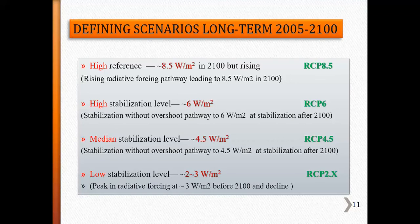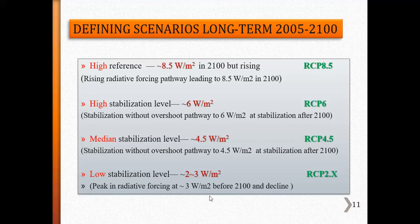RCP 6 is a high stabilization level without overshoot pathway. RCP 4.5 represents median or average conditions for climate change variables — not high and not low. RCP 2.6 is the lowest stabilization level, representing a low scenario where radiative forcing peaks and then declines.